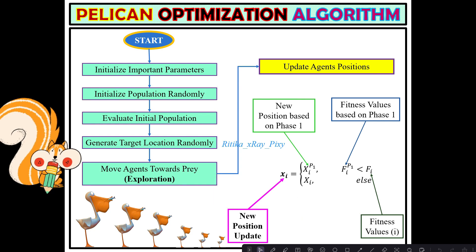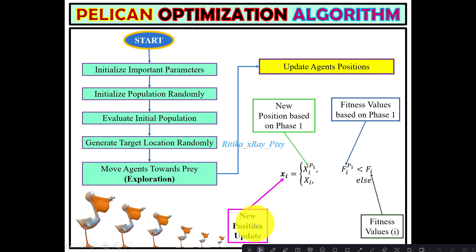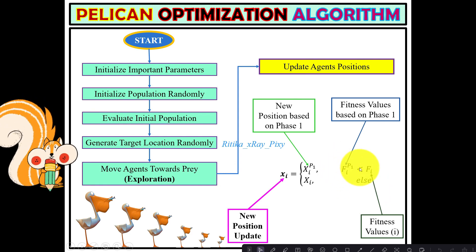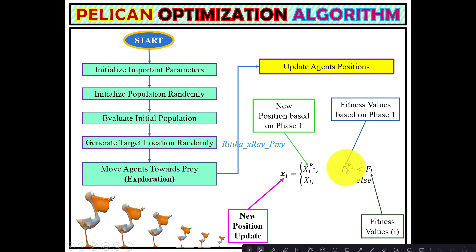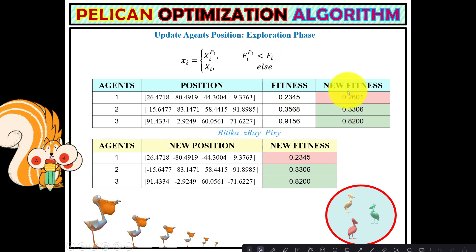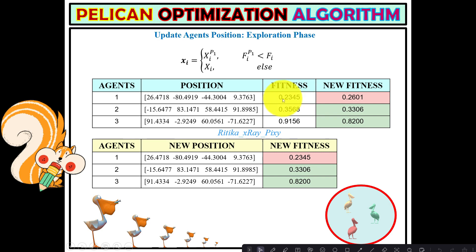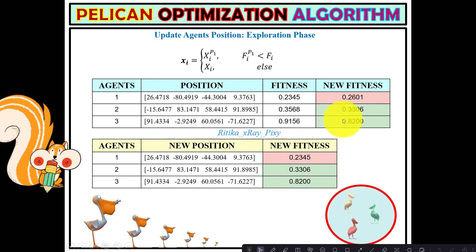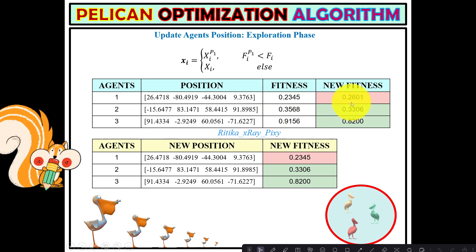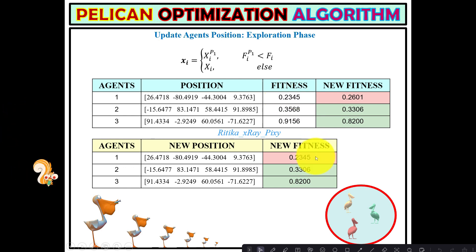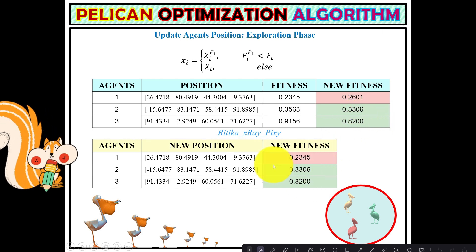In the Pelican Optimization Algorithm, effective updating is used: the pelican's position is updated only if the new fitness value is better than the older one. For example, with three agents, if the first agent's older fitness value (e.g., 0.2345) is better than the new one, the older value is kept. For the second and third agents, if the new fitness values are better, those updated values are used.